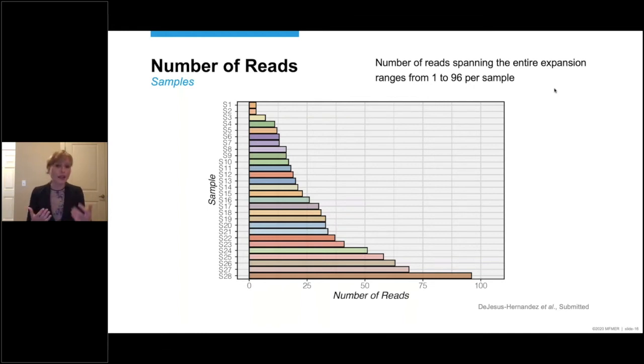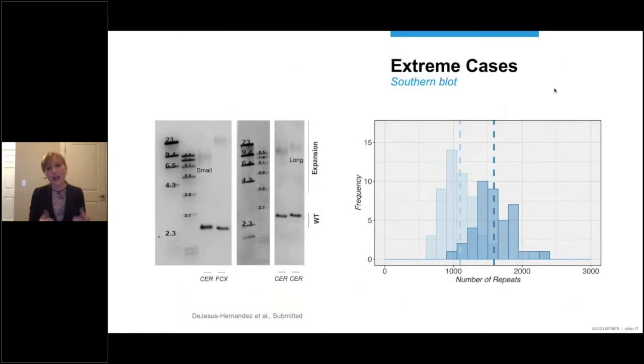But first, I was hoping to share some extreme cases with you. On the left, you can see a couple of southern blots. An individual with a relatively small expansion in the cerebellum. And another individual with a relatively long expansion in the cerebellum. And when we performed no-amp sequencing, we saw a similar pattern. The individual with a small expansion is shown in light blue. And the individual with a long expansion in dark blue. And these findings, therefore, are very reassuring.